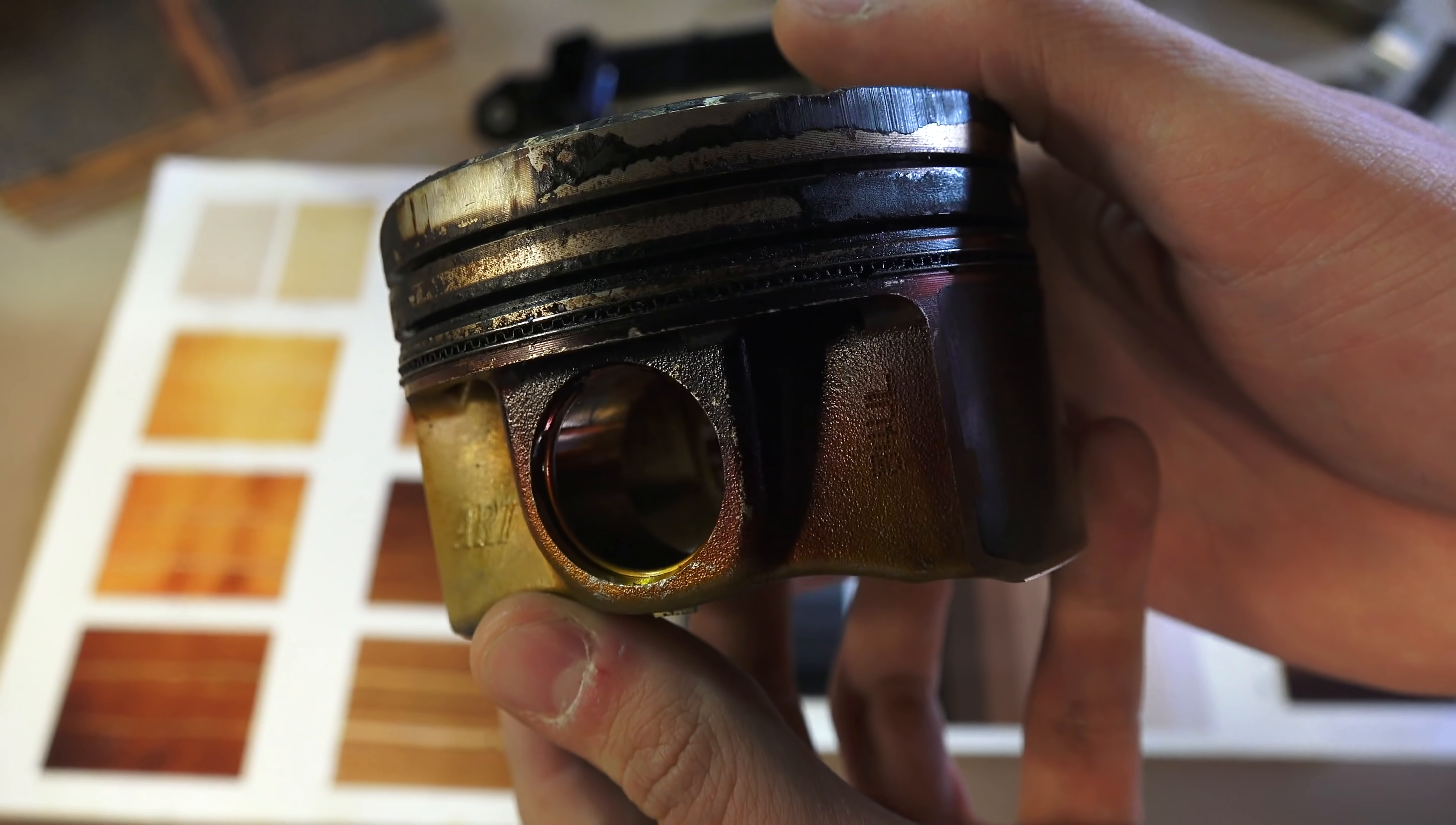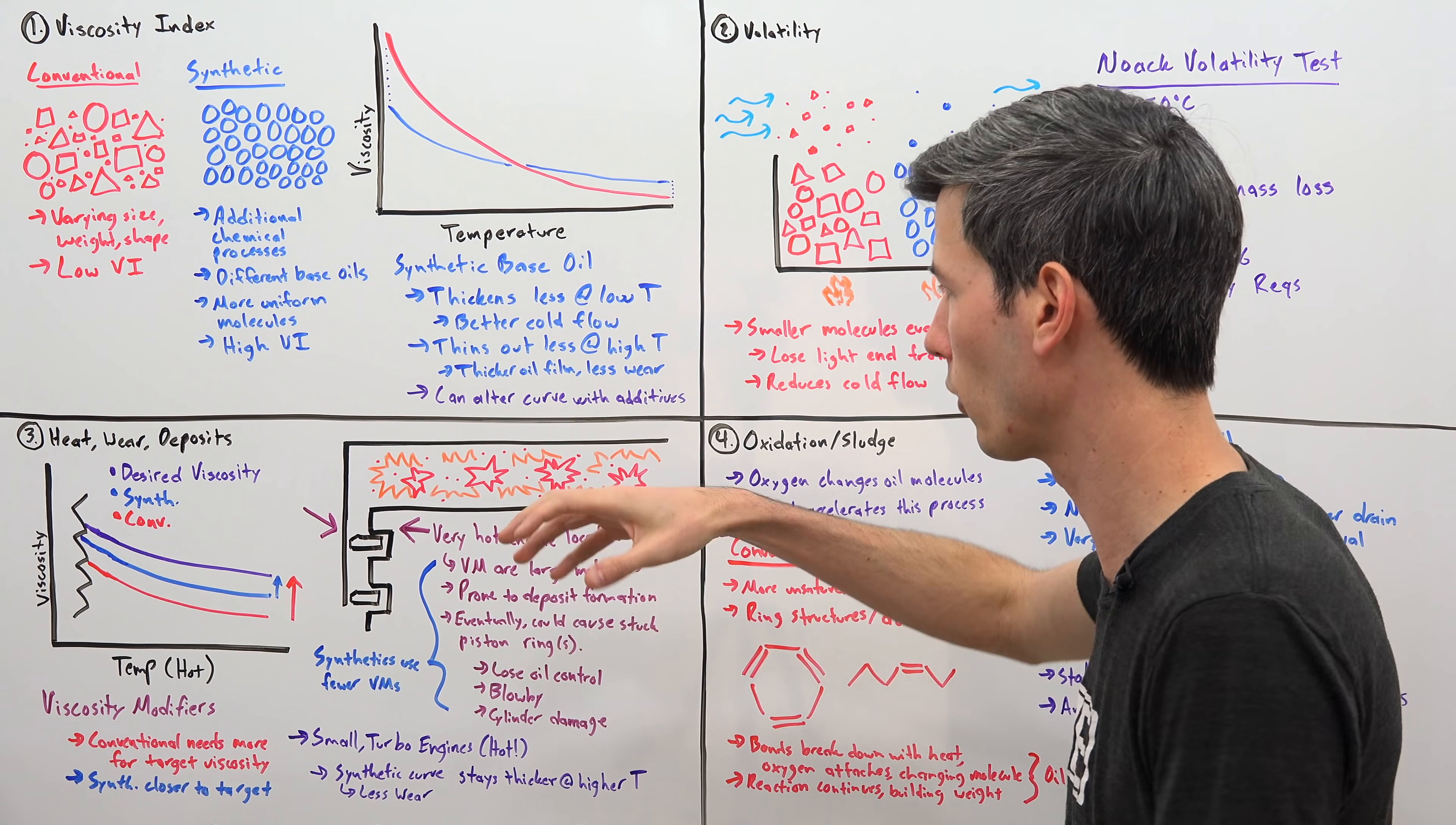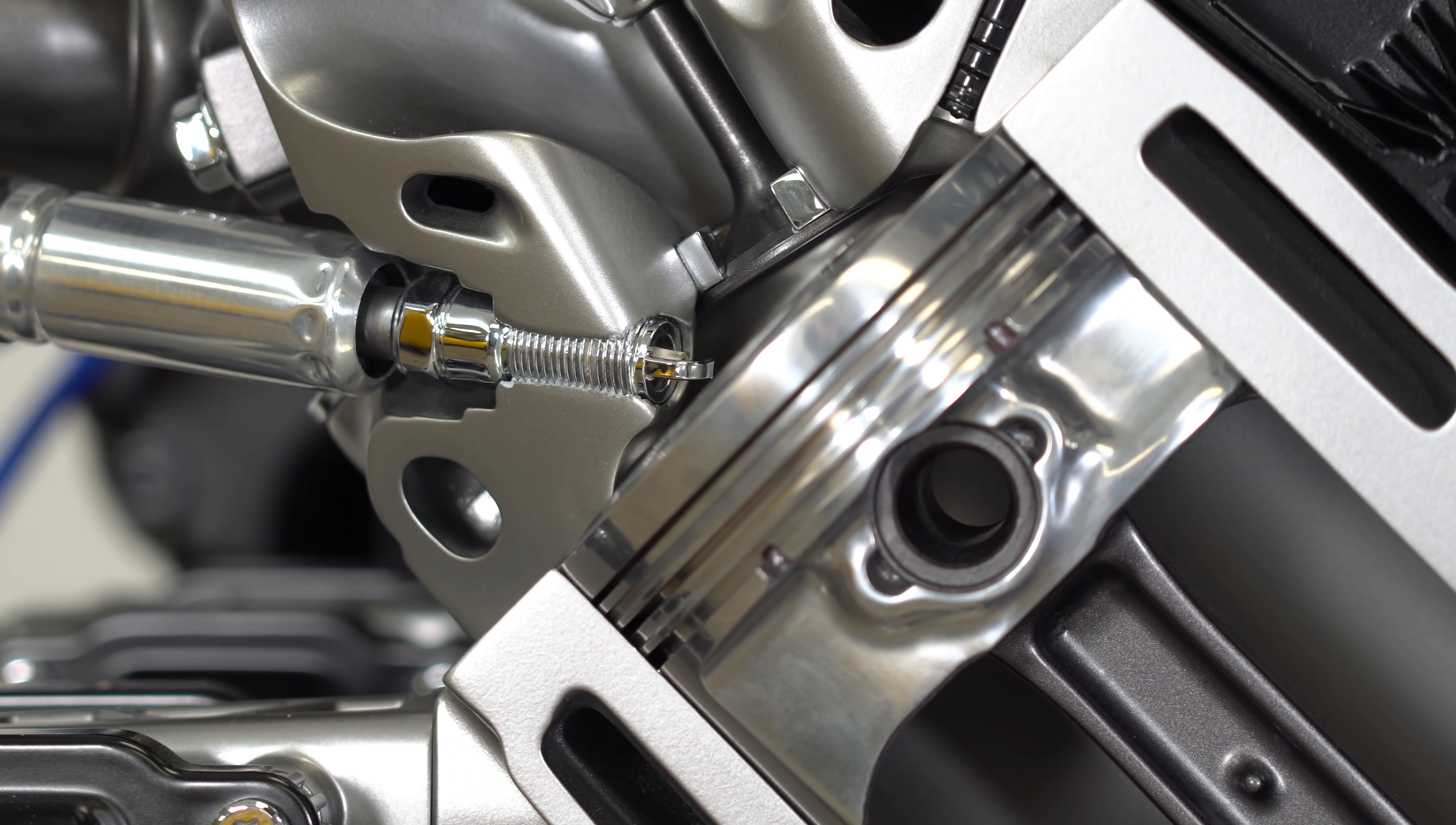Eventually, if you don't change your oil frequently enough, the challenge you can have here is these deposits can then start to cause your piston rings to lock in place. Once your piston ring isn't moving anymore, well you've lost your oil control, you're going to have blow-by, you're going to have cylinder damage because that locked piston ring can start to have deposits that are then scoring that cylinder wall. Basically the stuff that's above your combustion is then able to pass below, and the stuff that's below your oil is able to come up into your combustion chamber. So it just starts this really bad chain reaction of kind of just destroying your engine. Because synthetics use fewer viscosity modifiers, they're less susceptible to having those deposits form in these high temperature areas where you can have damage occur from that.